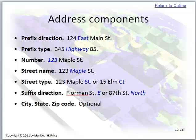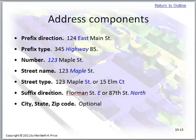These are some address components, which is an exact question out of the review questions you'll be doing this week. The prefix direction is east, prefix type is the highway, then a number, street name, street type, direction — and the city, state, and zip code are optional.